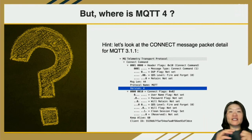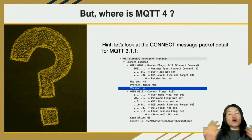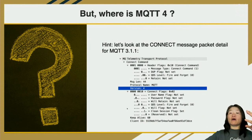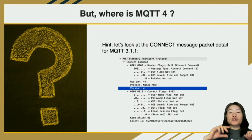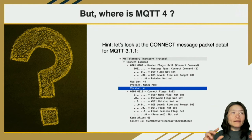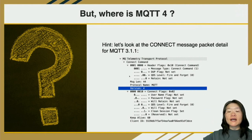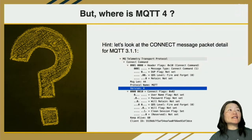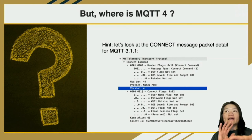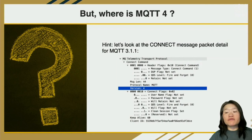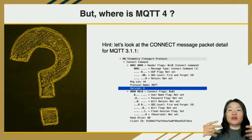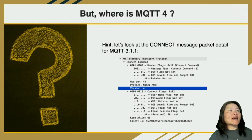Why is there no MQTT 4? Looking at the CONNECT packet detail for MQTT 3.1.1, there's a version field that is actually version 4 internally. When designing the next generation, they set the version to 5, and instead of naming it MQTT 4, they aligned the specification version number with the packet version number — so MQTT 5 was born.